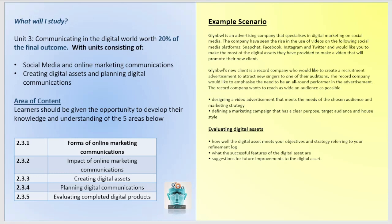Unit 3, Communicating in the Digital World, is worth 20% of your final outcome. It consists of social media and online marketing communications, creating digital assets, and planning digital communications. You'll do research on forms of online marketing — how people advertise online, what the best and most productive ways are, and how many extra viewers different methods generate. You'll then create digital assets such as a video advert and animations, then plan digital communications and evaluate completed digital products.